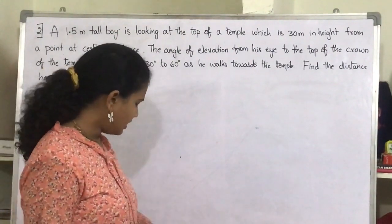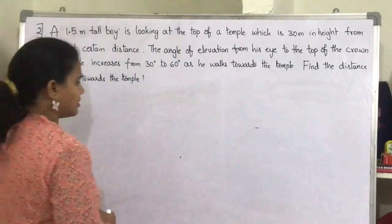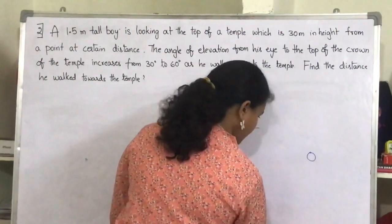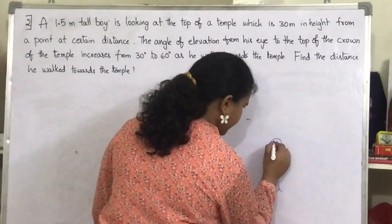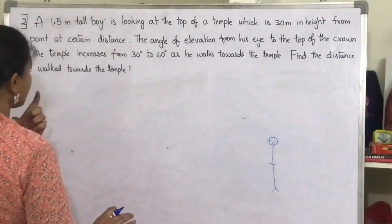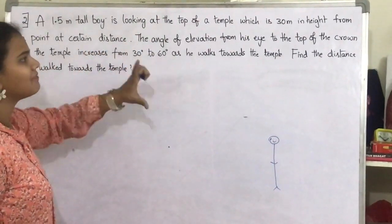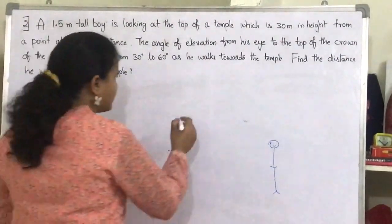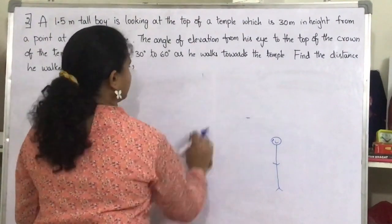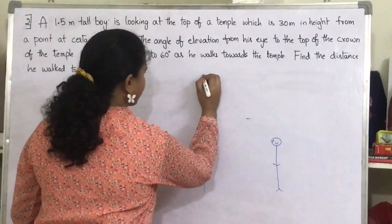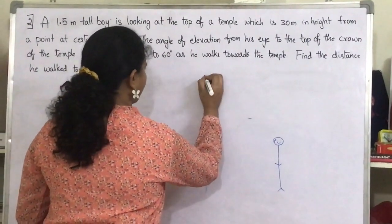Now let's draw the diagram according to the given data. A 1.5 meter tall boy is looking at the top of the temple, so let's draw. Here you have a 1.5 meter tall boy, and he is looking at the top of the temple which is 30 meters in height. He is watching the crown of the temple.